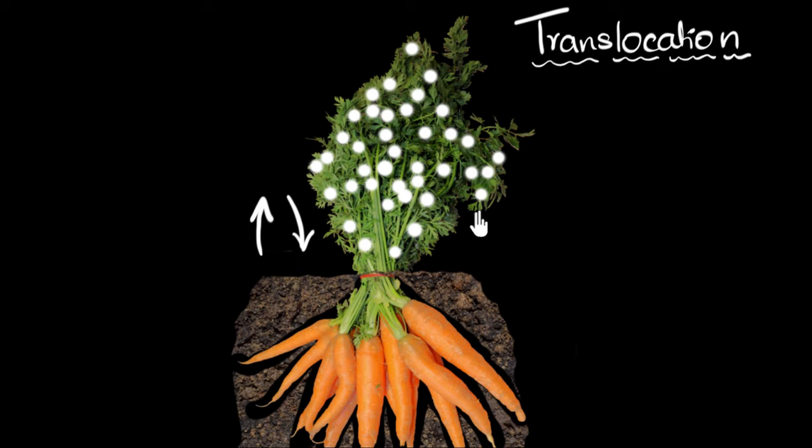How do they even understand which part of the plant body needs food? Because they don't have a brain. And secondly, what mechanism do they use to transport that food up or down according to their needs? Let's find out.